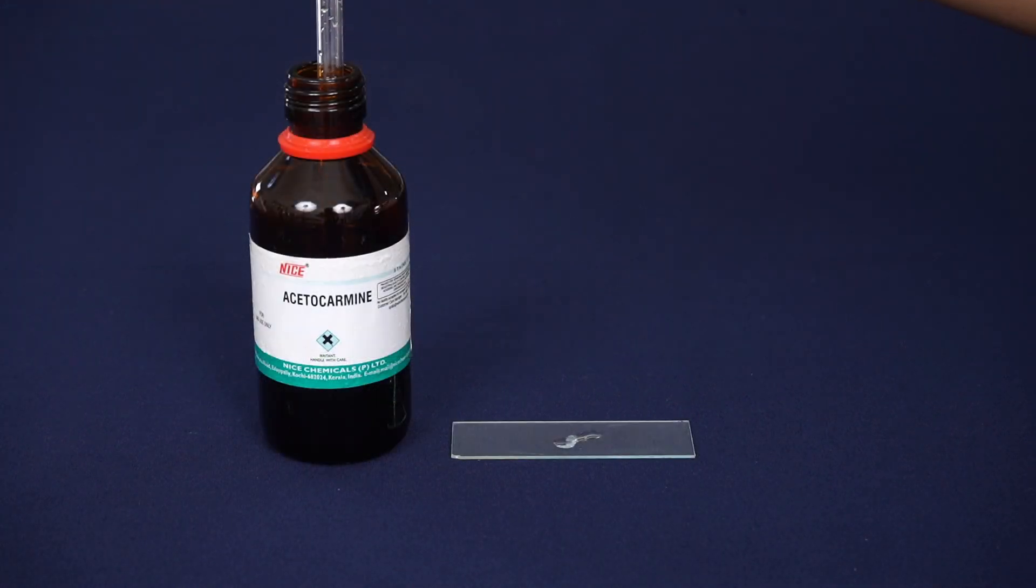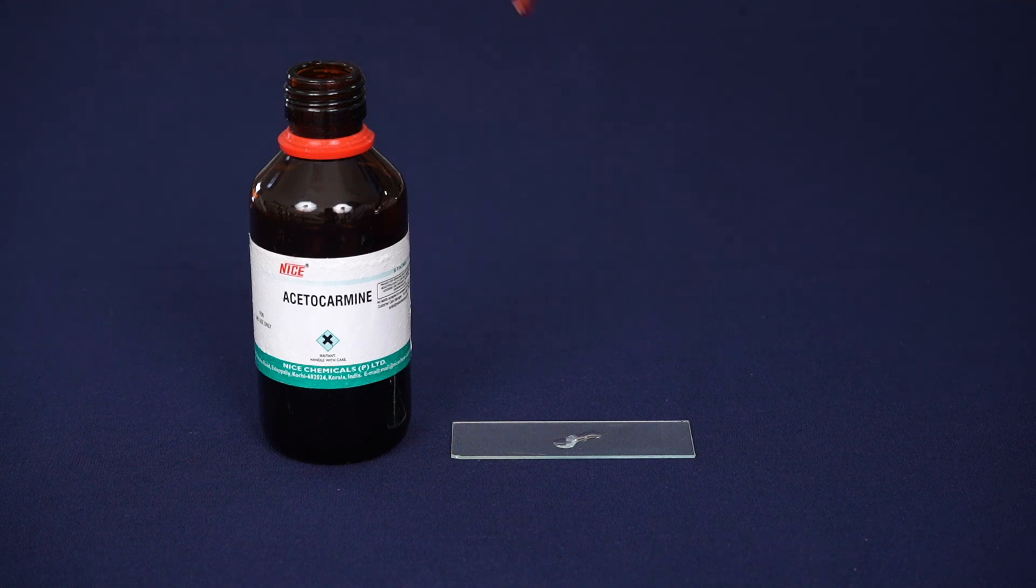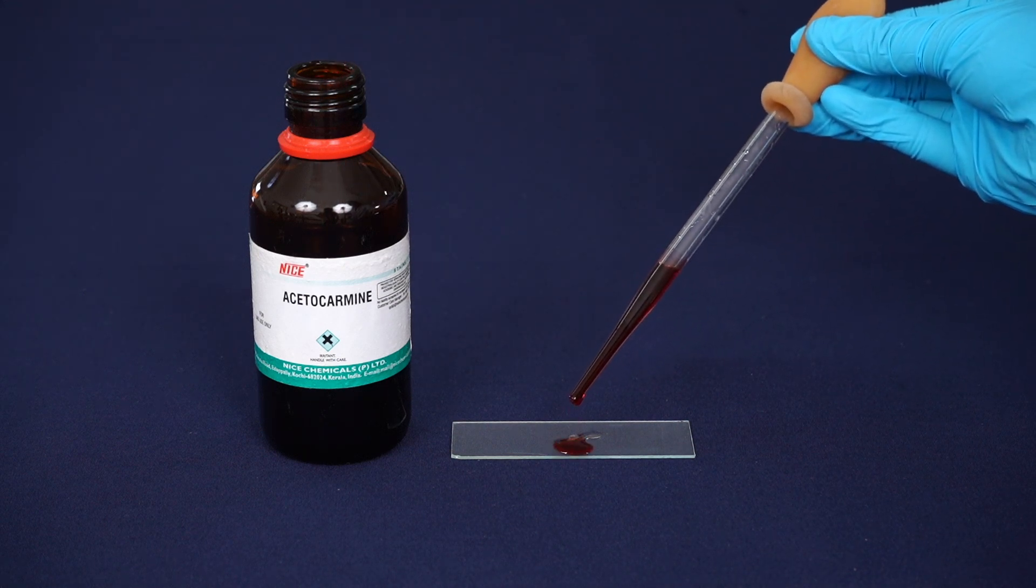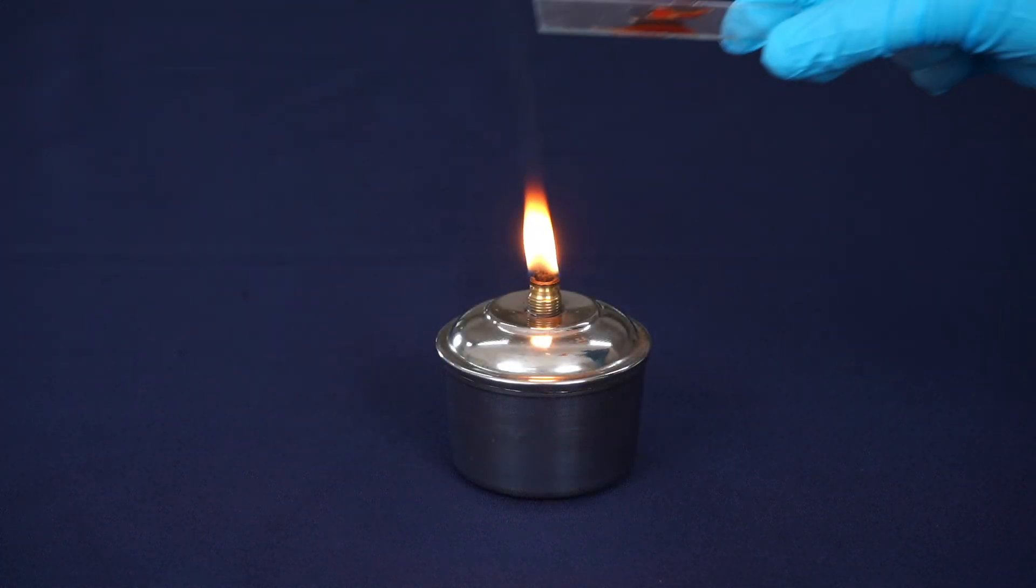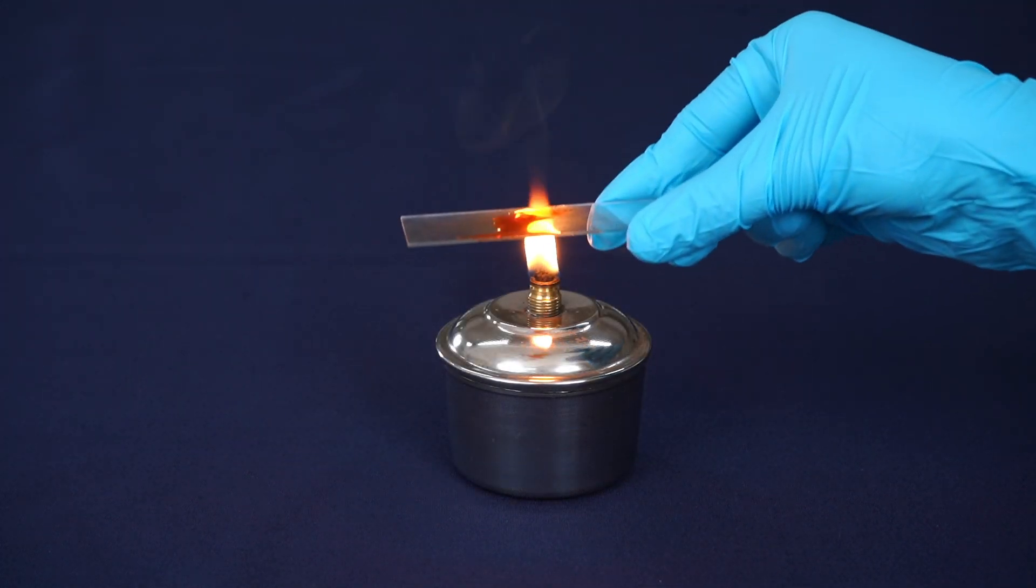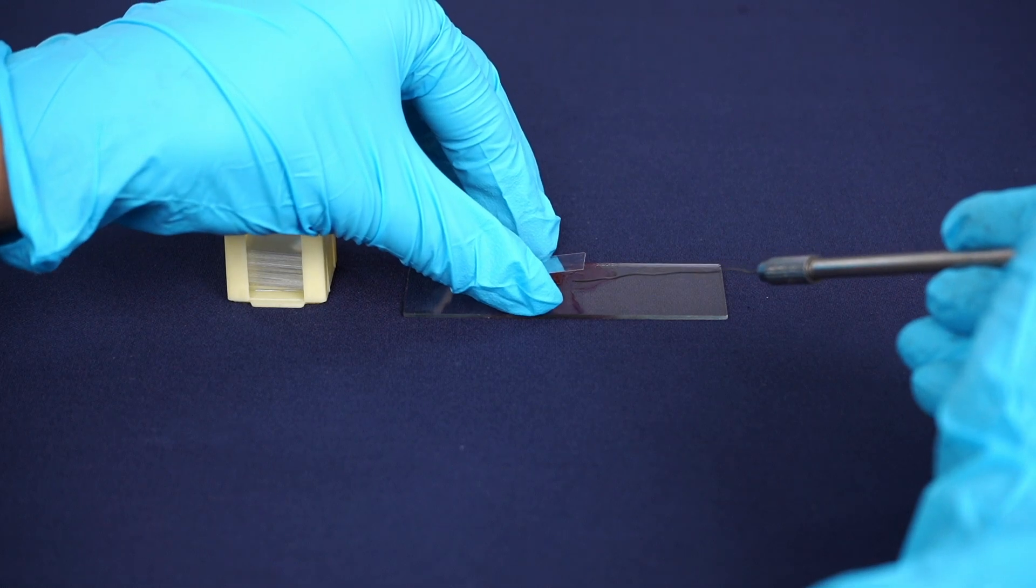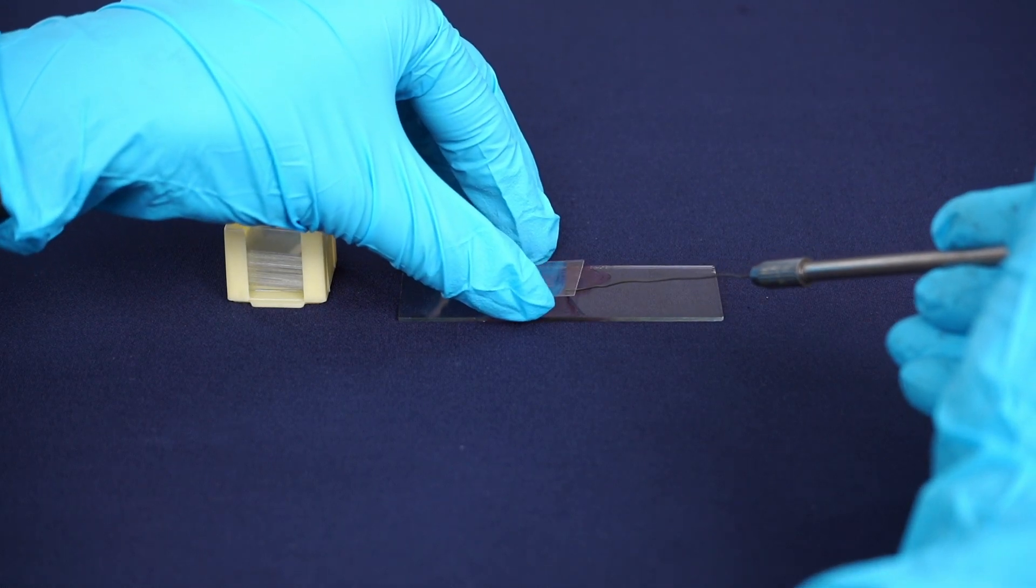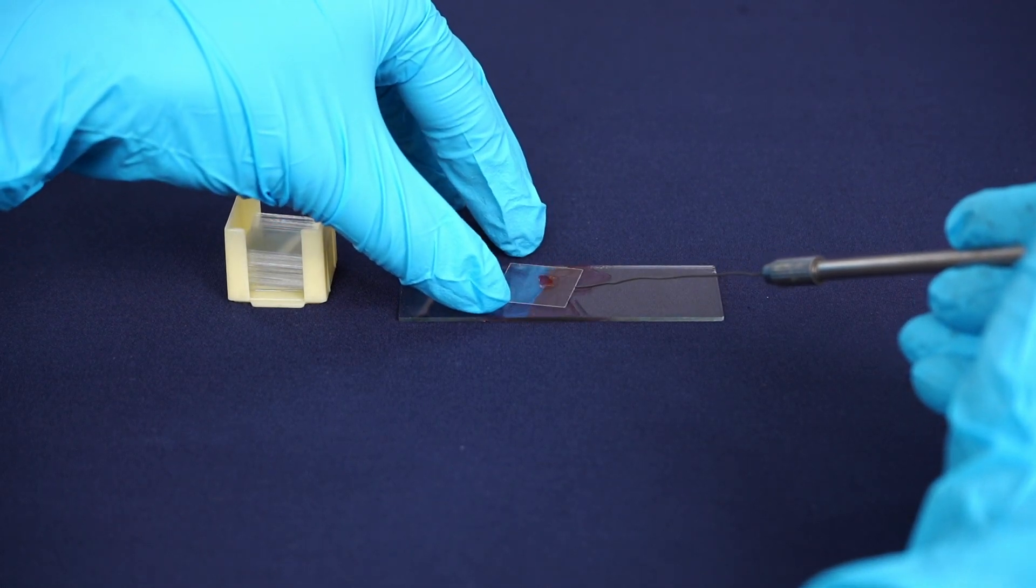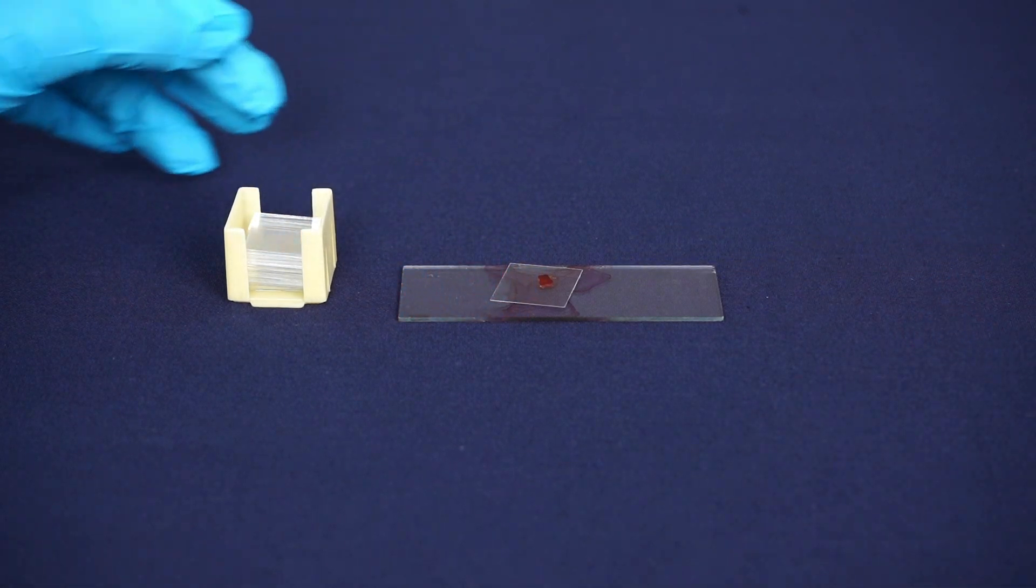Put two drops of acetocarmine on the epidermal peel using dropper. Heat the glass slide gently on a spirit lamp. Place a cover slip over the peel with the aid of needle by avoiding air bubbles and wrinkles of the material.